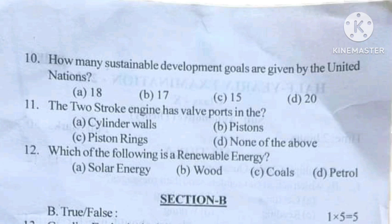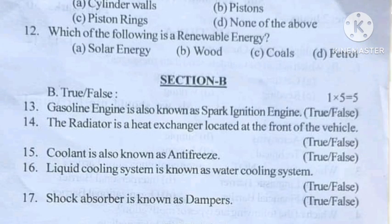Now it turns to Section B. True or false: Gasoline engine is also known as spark ignition engine. The radiator is a heat exchanger located at the front of the vehicle. Coolant is also known as anti-freeze. Liquid cooling system is known as water cooling system. Shock absorber is known as dampers.